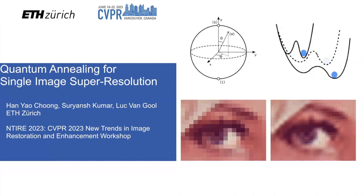Hello, this is a presentation on the paper 'Quantum Annealing for Single Image Super-Resolution' by Hanyal Chong, Suwanesh Kumar, and Luke Van Gogh of ETH Zurich. This paper is part of the CVPR 2023 New Trends in Image Restoration and Enhancement Workshop.